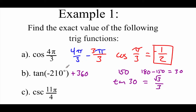And again, we need to check our original angle theta to figure out if this is going to be positive or negative. We can either look at the negative 210, or I'm actually going to look at the 150. I know that 150 is a second quadrant angle, and tangents are negative in the second quadrant, so we get negative √3 over 3.